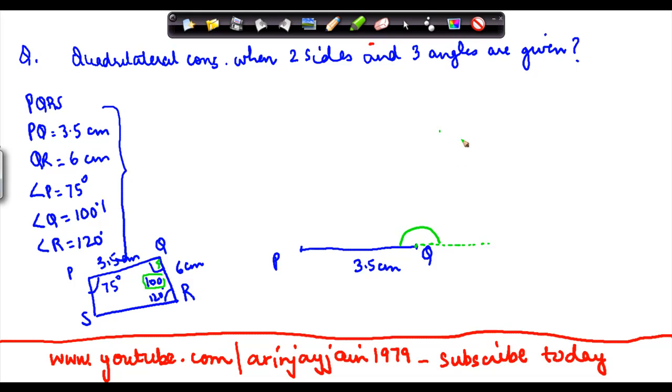I take 6 centimeters from here and cut an arc. Point R lies somewhere on this arc because this arc is at a distance of 6 centimeters from Q. It can be anywhere on the arc. But what I also know is that to reach R, I have to create an angle of 100 degrees from here. So this is the most crucial part. How do you do that?